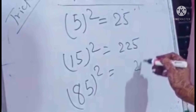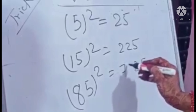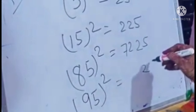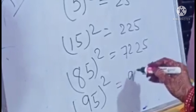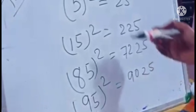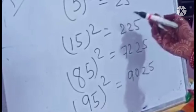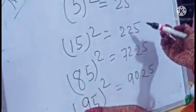Hey guys, today I am going to explain some tricks of Vedic Maths. I have written here the numbers 103 and 106. These numbers are near around 100. So you can see here, 103 is 3 more than 100, and 106 is 6 more than 100.